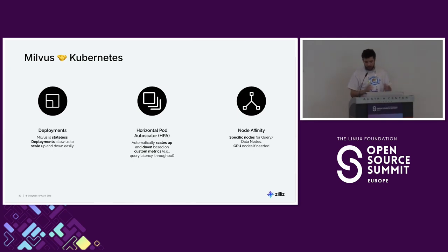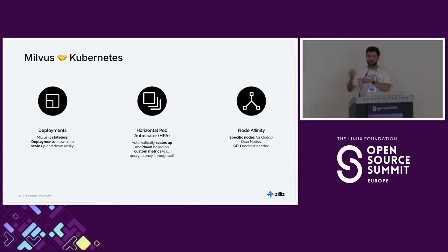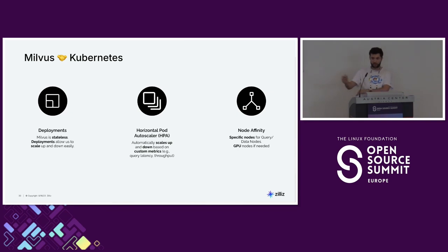You can also use node affinity — for example, you might want to run the query node on specific nodes of your Kubernetes cluster and the data node on others, because they have different needs. And at really crazy scale for vector search, you might want to run on GPU nodes — you can define that a specific query should run on the GPU node.